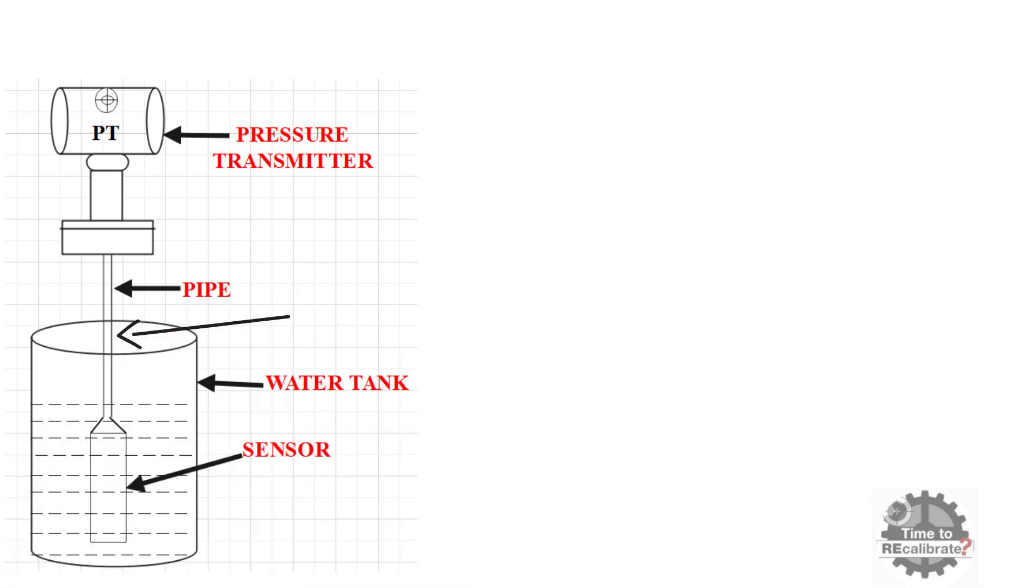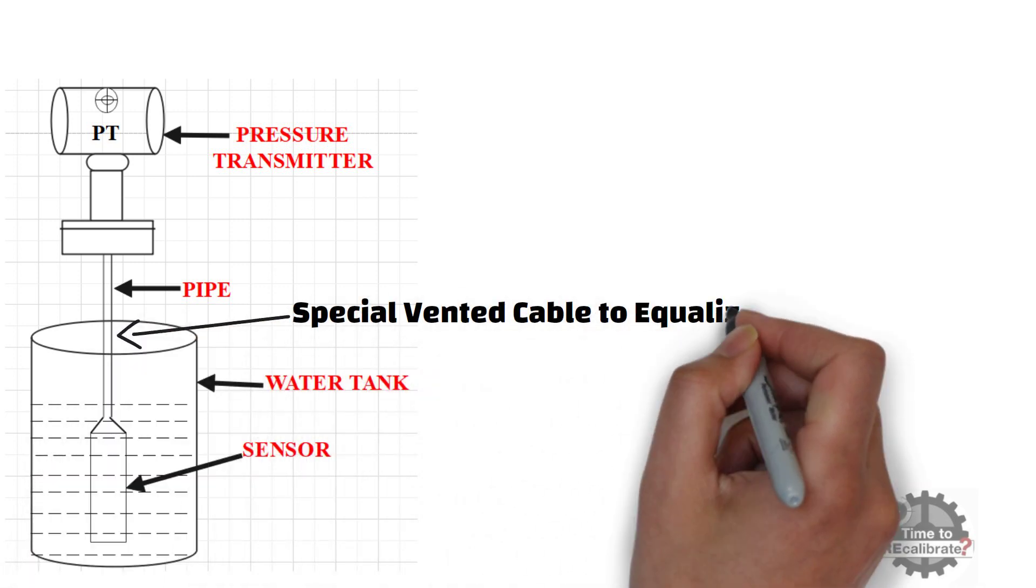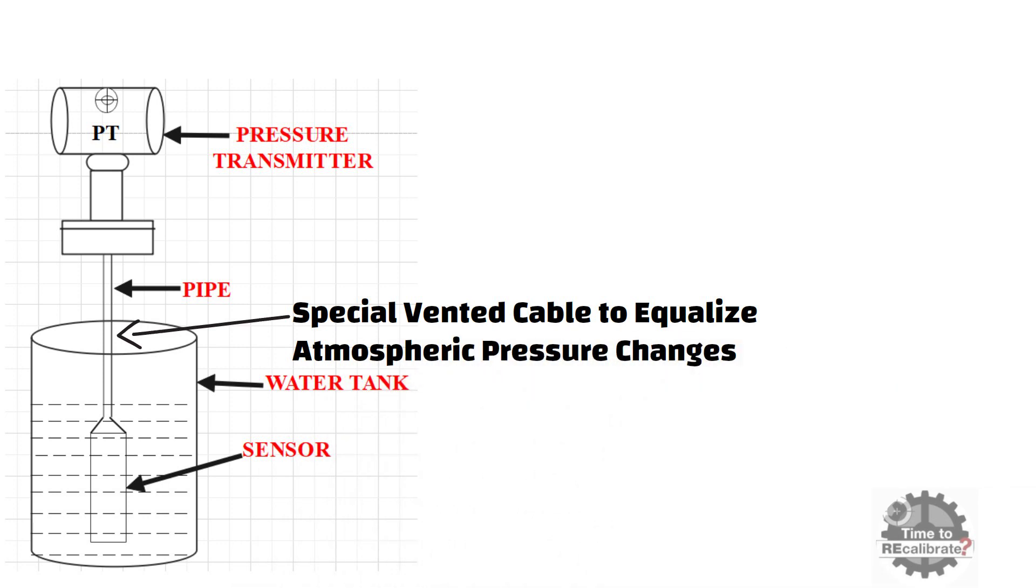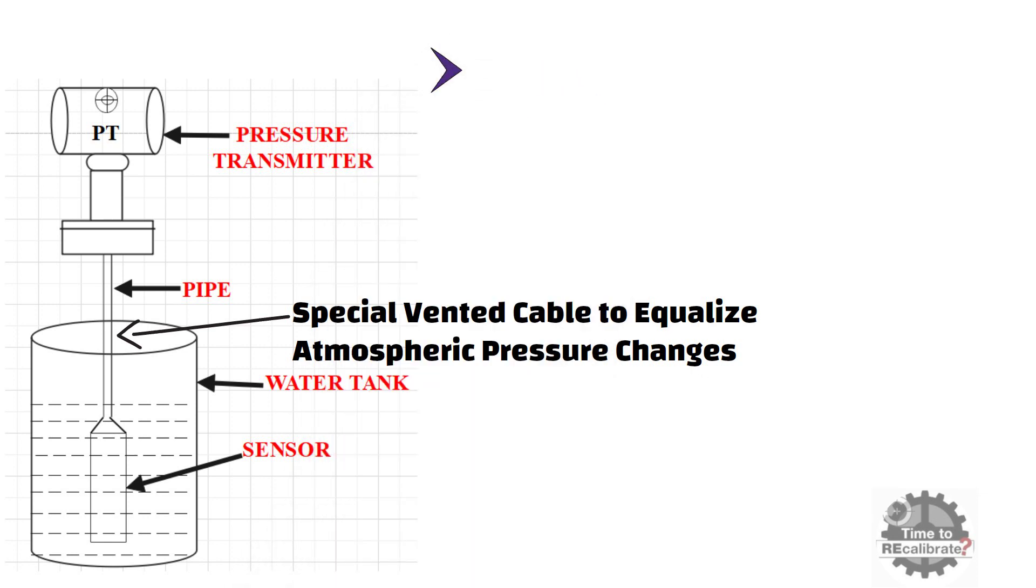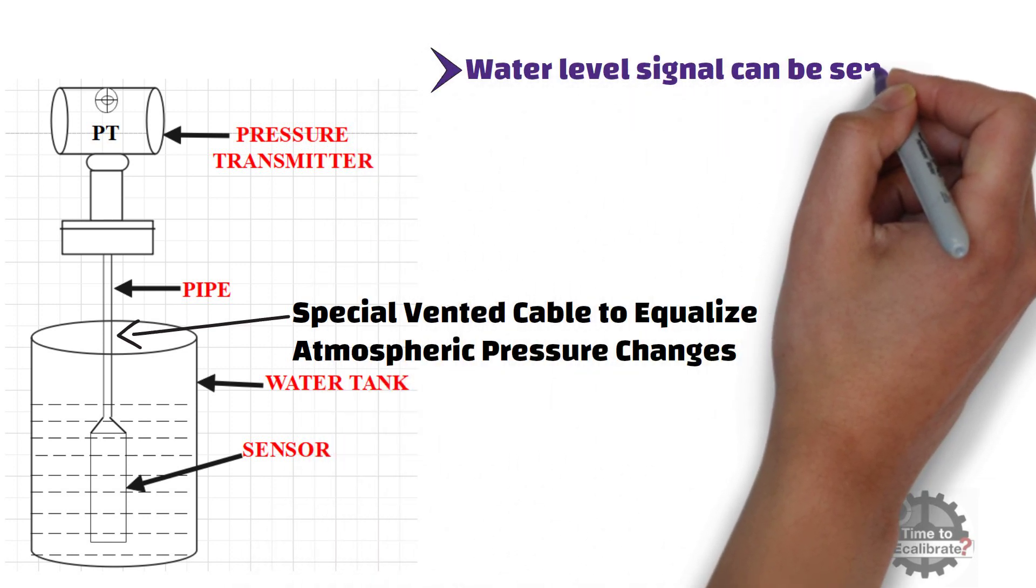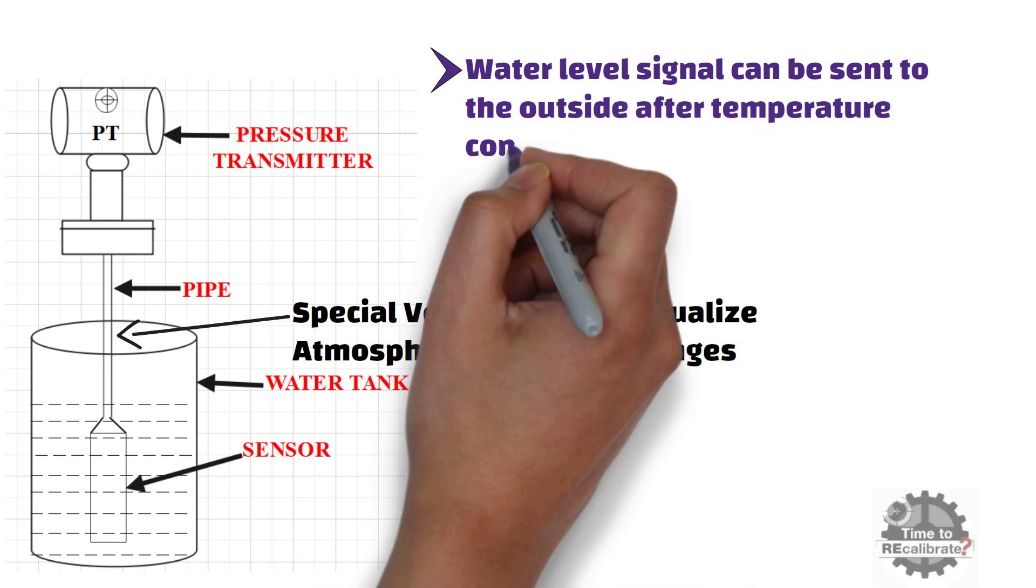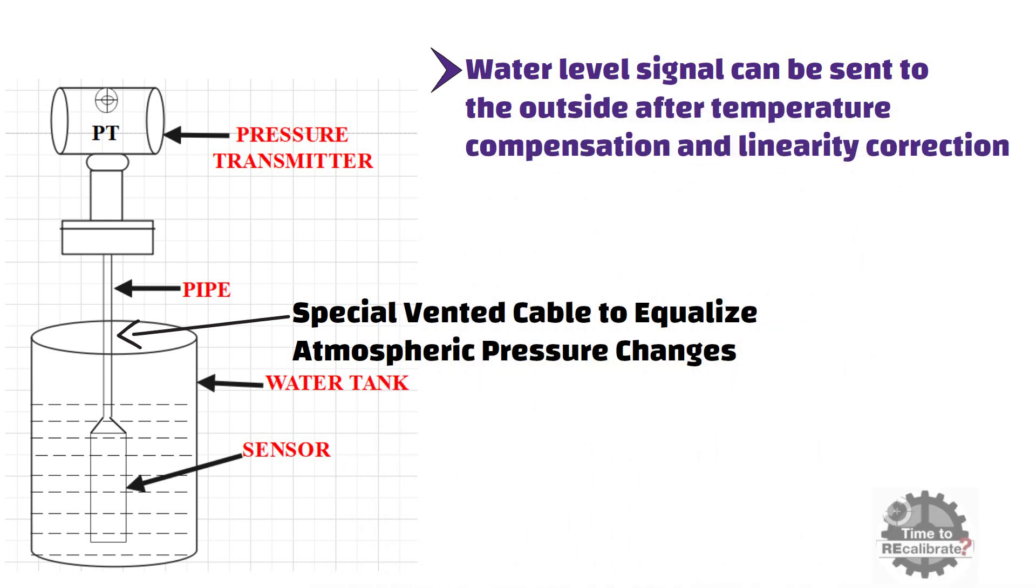Submersible pressure transmitter comes with a special vented cable to equalize atmospheric pressure changes, so it accurately transmits the measured liquid level to the transmitter. Water level signal can be sent to the outside through a standard current signal of 4 to 20 milliamperes after temperature compensation and linearity correction.